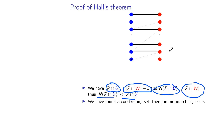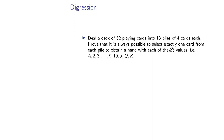That's how you prove Hall's theorem. You'll see in a couple of lectures a much simpler proof involving linear programming, complementary slackness, and duality — which is actually how I always remember this proof myself.